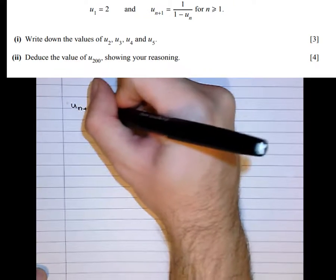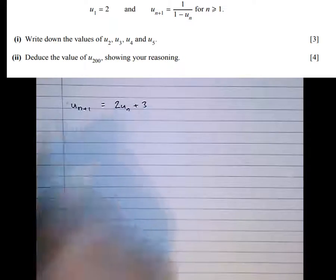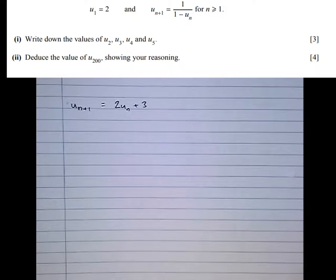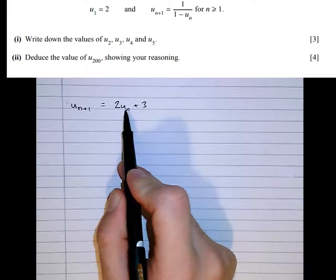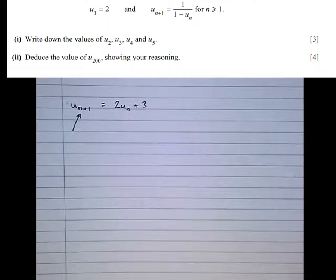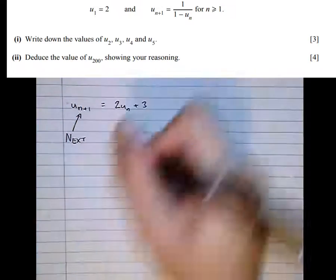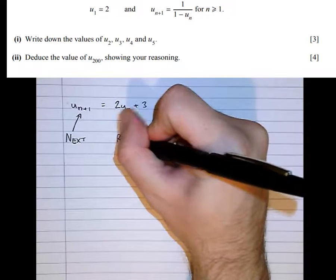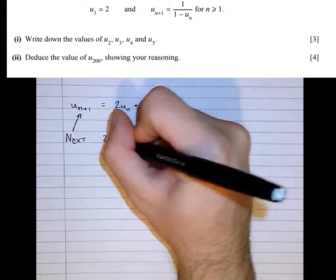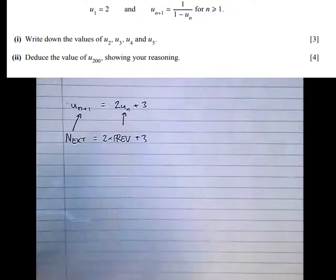So un+1 equals 2un plus 3. Now in sequences, u is the term of a sequence. So this here says the n+1th term equals 2 lots of the nth term plus 3. So this is a way of getting from one term to another. In GCSE, you might have called it a term-to-term rule. That says the next term of a sequence is 2 lots of the previous term of a sequence plus 3.